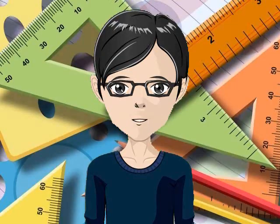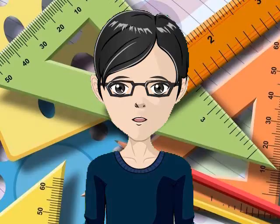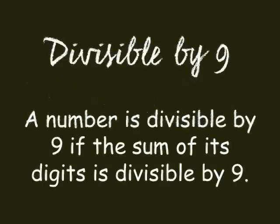Did you get everything correct? I hope so. Okay, let's go to the next rule. To check if a number is divisible by 9, you also add the digits. If the sum of the digits is divisible by 9, then the number is divisible by 9.